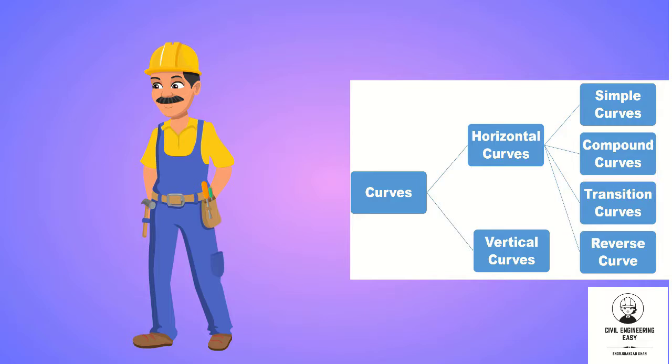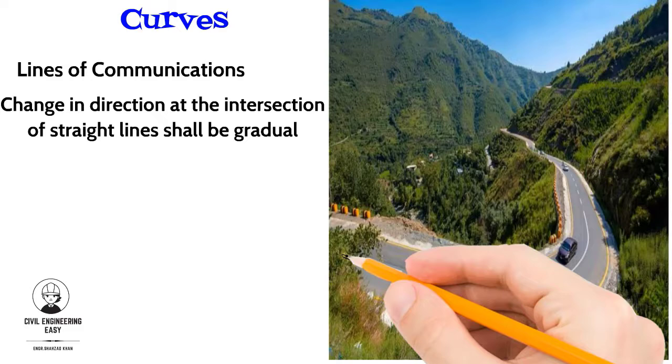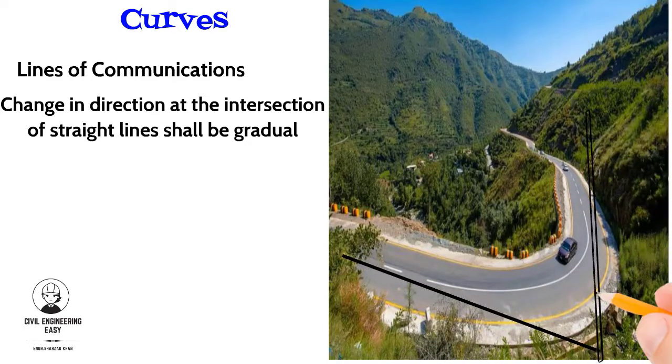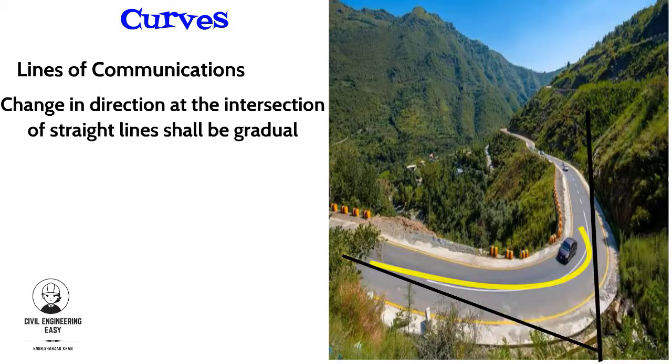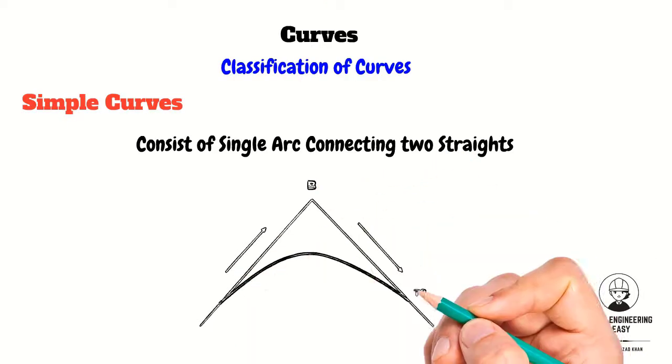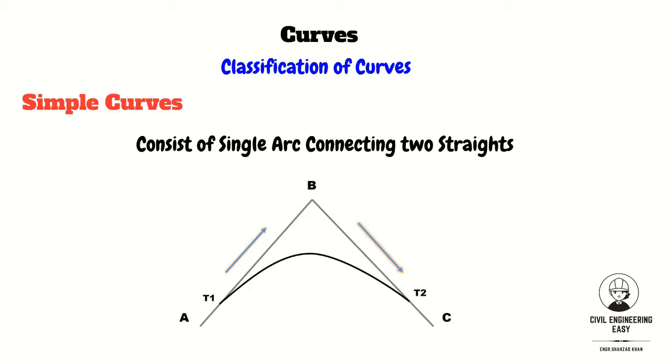Let's study them one by one. Whenever the direction of the road or railway line is to be changed, curves are provided between the intersecting straights. This is for the safe movement of vehicles and for the comfort of passengers. A simple curve consists of a single arc connecting two straights. In this figure, the lines AB and BC represent the tangent line to the curve. A simple curve has a radius of the same magnitude throughout.